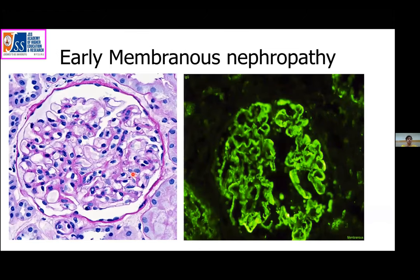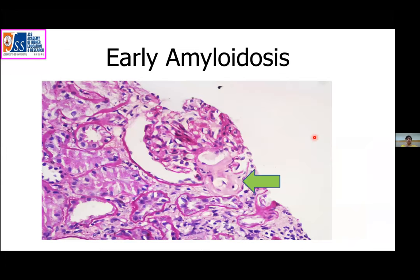On light microscopy, glomeruli appear absolutely normal with very little mesangial matrix. On immunofluorescence there are IgG deposits and complement, suggesting a diagnosis of membranous nephropathy. In early amyloidosis, changes can be very subtle — there can be focal and segmental deposition of faint PAS-positive material around afferent arterioles, which should raise suspicion for amyloidosis and prompt a Congo red stain. Always use a thick 8-micrometer section to demonstrate amyloid, as it can be missed in thin sections, and use good polarized microscopy.